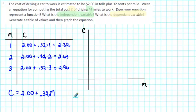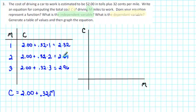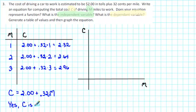Our formula is C equals two dollars plus 0.32 times M, the number of miles driven. So we have written an equation. Does our equation represent a function? Yes, because for each input there is just one corresponding output. When we input one, the output is 2.32. When we input two, the output is two dollars and 64 cents, and so on. For each input there is one output, so the equation does represent a function — yes, C is a function of M.